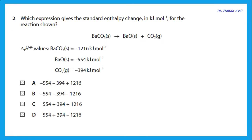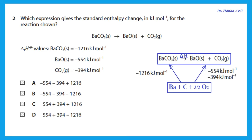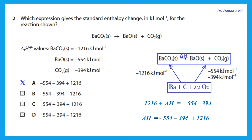Which expression gives the standard enthalpy change for the reaction shown? We are provided with the delta H of formation of each species. So we can draw a Hess cycle, starting from the elements and going up, forming barium carbonate with its delta H, forming one barium oxide and one CO2. From the Hess cycle, the expression for the delta H is this one.